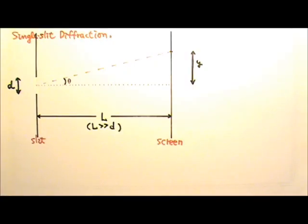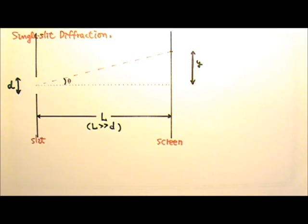After Thomas Young's double slit interference experiment showed convincing evidence to support Huygens' light wave theory, experiments on diffraction further advanced light wave theory. Now let's look at the single slit diffraction experiment.